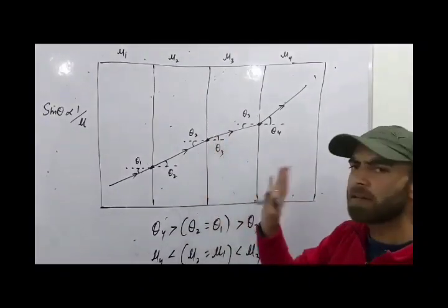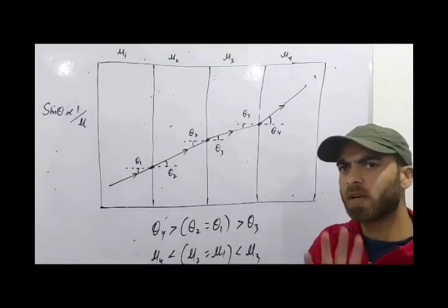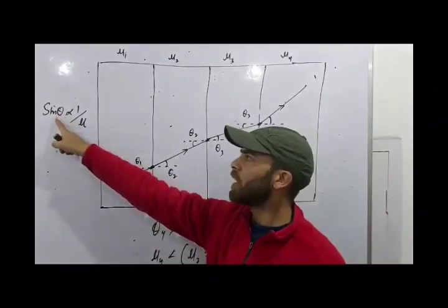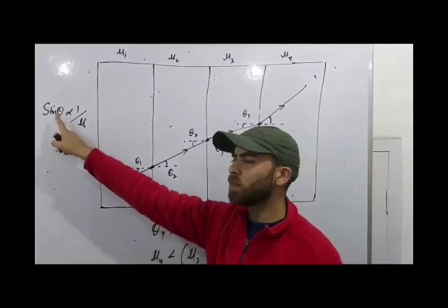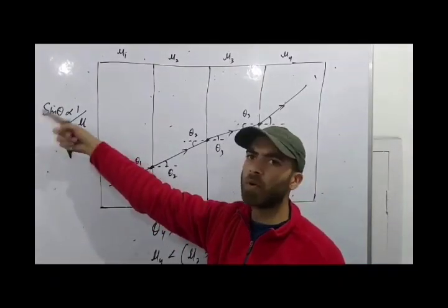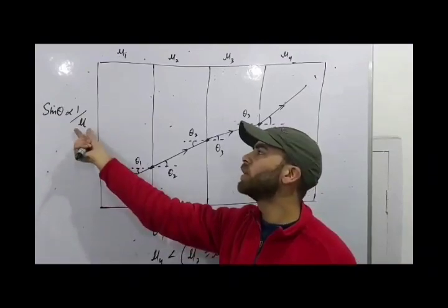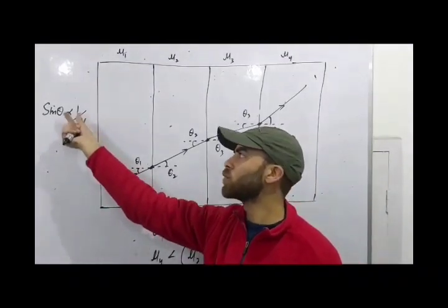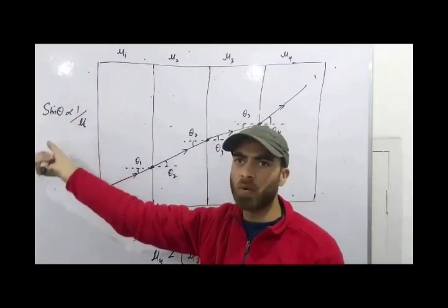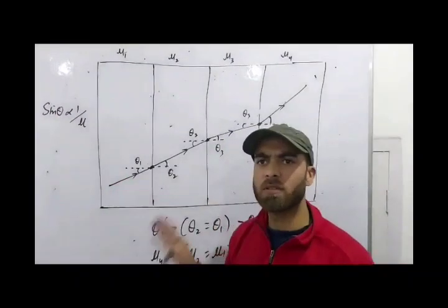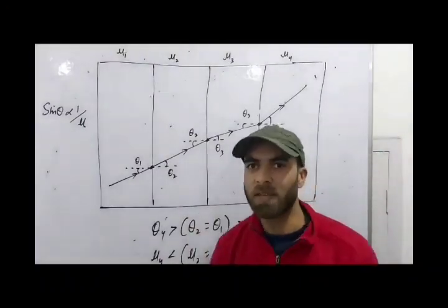This is a basic and simple problem on Snell's Law. The key concept is: the angle made by the ray of light with the normal in any medium is inversely related to the refractive index of that medium. This is how you solve problems based on the concept of Snell's Law. Thank you.